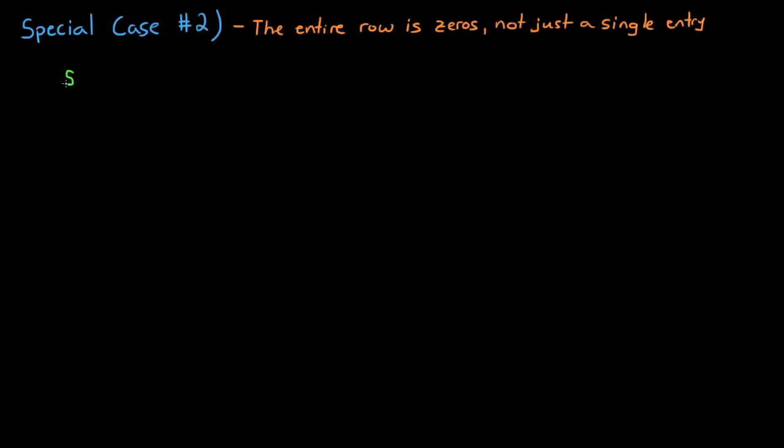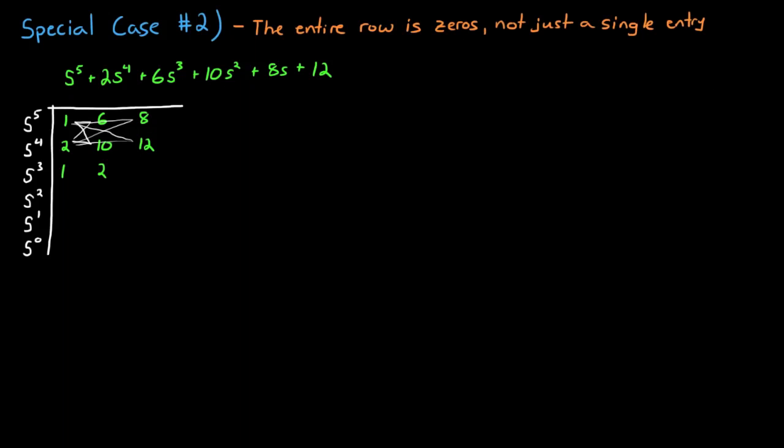I'll demonstrate this special case and what to do with it with this polynomial. s to the fifth plus 2s to the fourth plus 6s cubed plus 10s squared plus 8s plus 12. And let's fill out the Routh array by populating the first two rows, and then we'll populate the other rows using our figure 8 method. But when you get to the fifth row, or the s to the first power row, that one becomes all 0's.